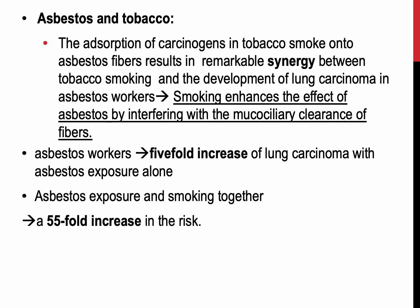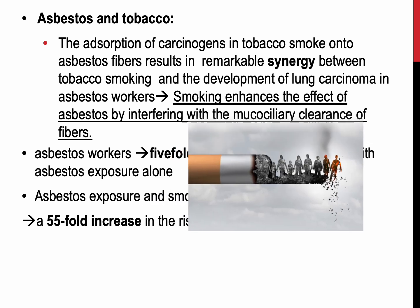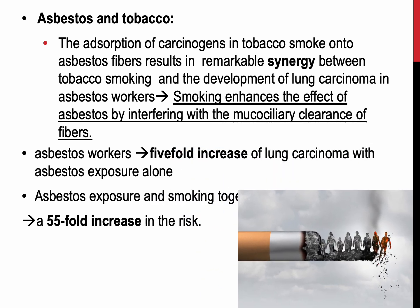The relationship between asbestos and tobacco is interesting. In general, the adsorption of potentially toxic chemicals onto asbestos fibers increases its pathogenicity. As we know, tobacco smoking is considered the number one risk factor for the development of lung cancer, and occupational exposure to asbestos is also linked to the development of lung cancer. But what happens when a patient has both?